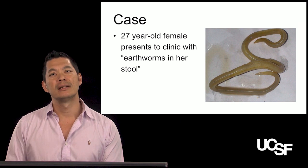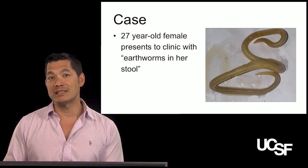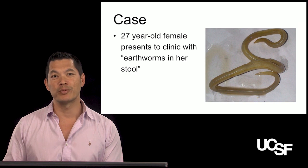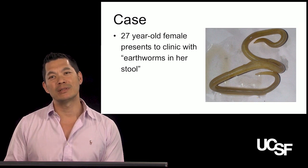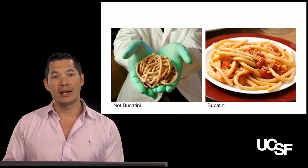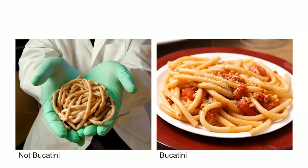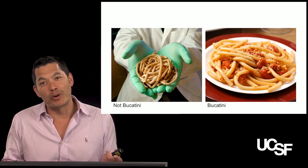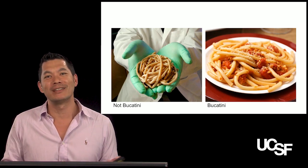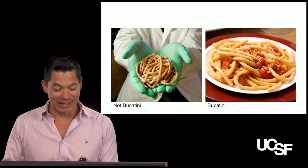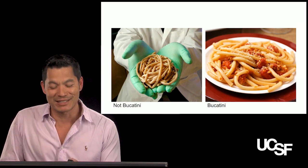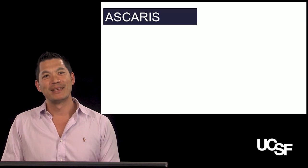The next parasite: a typical case is a 27-year-old female presenting to clinic with earthworms in her stool. These are probably the most classic cases of roundworms — what we call Ascaris. It often reminds me of Bucatini because of the similar thickness, with or without tomato sauce depending on whether or not there's blood. In this part of the course, you can use any memory aids you can get.